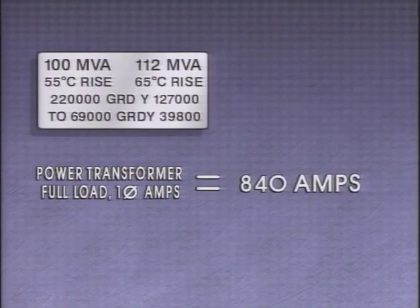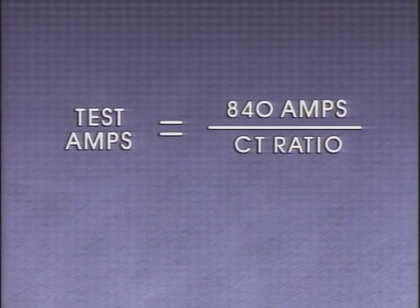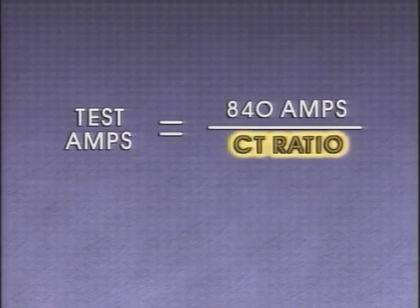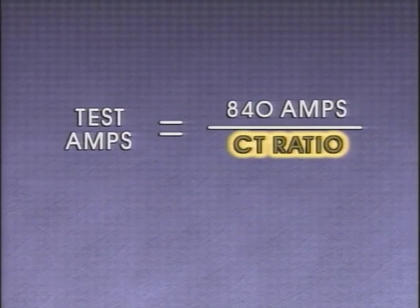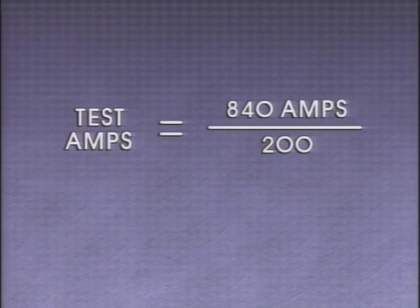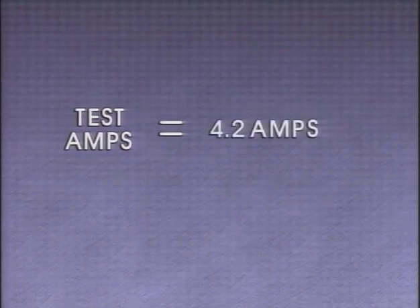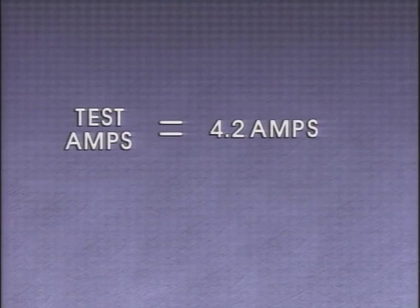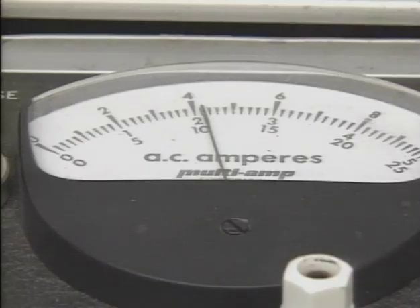Dividing 33,333 KVA by 39,838 V calculates out to about 840 amps, representing the primary current at the current transformer when the power transformer operates at full load. This figure is plugged into the test current formula: primary current divided by the current transformer ratio. The current transformer ratio in this example is 1000 to 5, or 200 to 1. Dividing 840 amps by 200 gives about 4.2 amps. The current transformer provides 4.2 amps to the winding temperature indicator heater circuit when the power transformer is at maximum rated volt-amperes, and 4.2 amps is the test current to be applied.